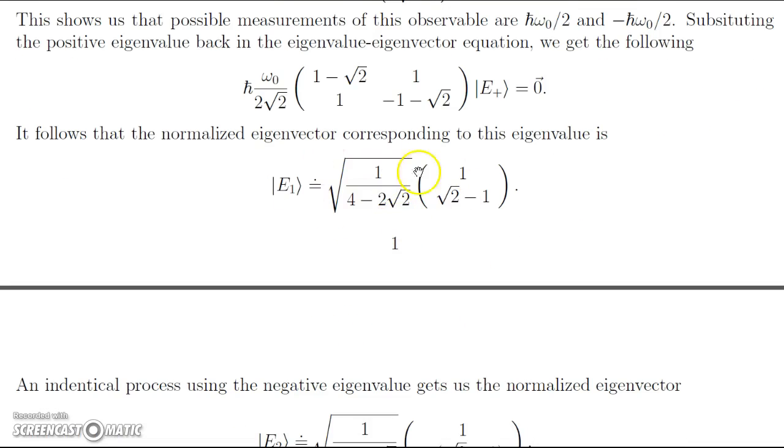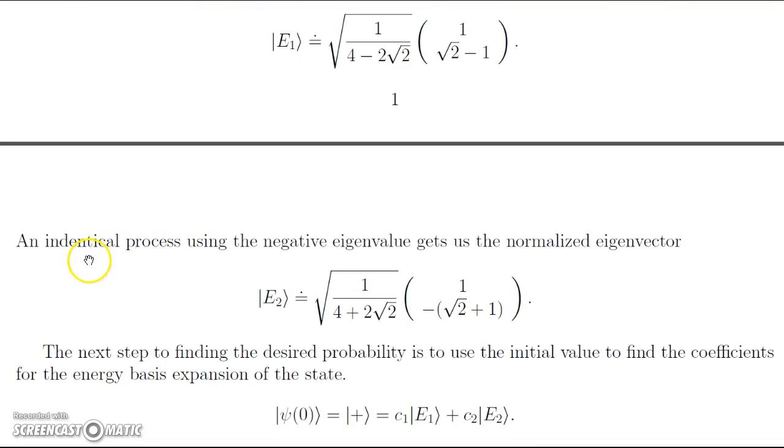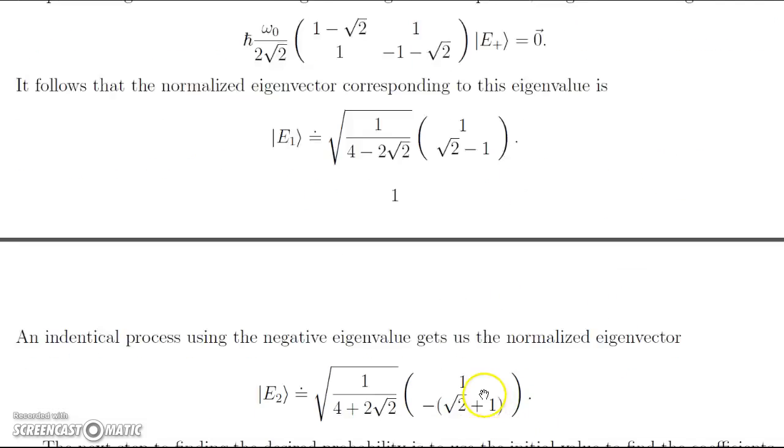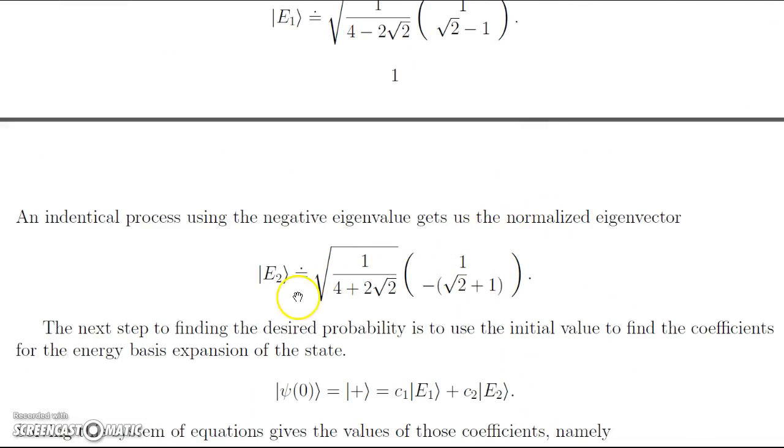This is a little messy, I do note. We can do an identical process for the negative eigenvalue, the minus ℏω_0 over 2. And this gets us the normalized eigenvector as followed, once again, very messy.